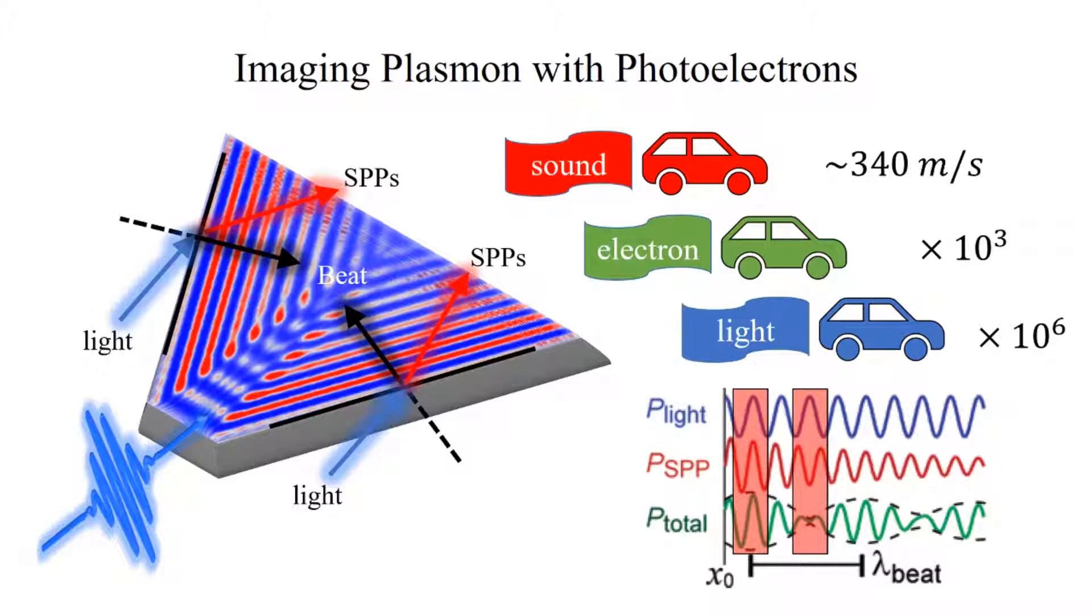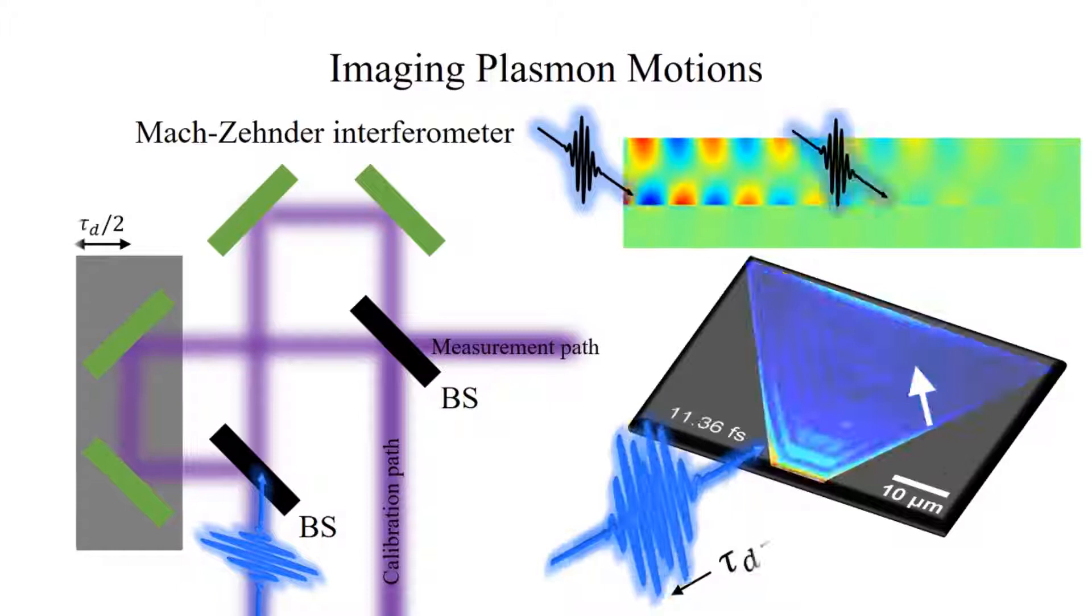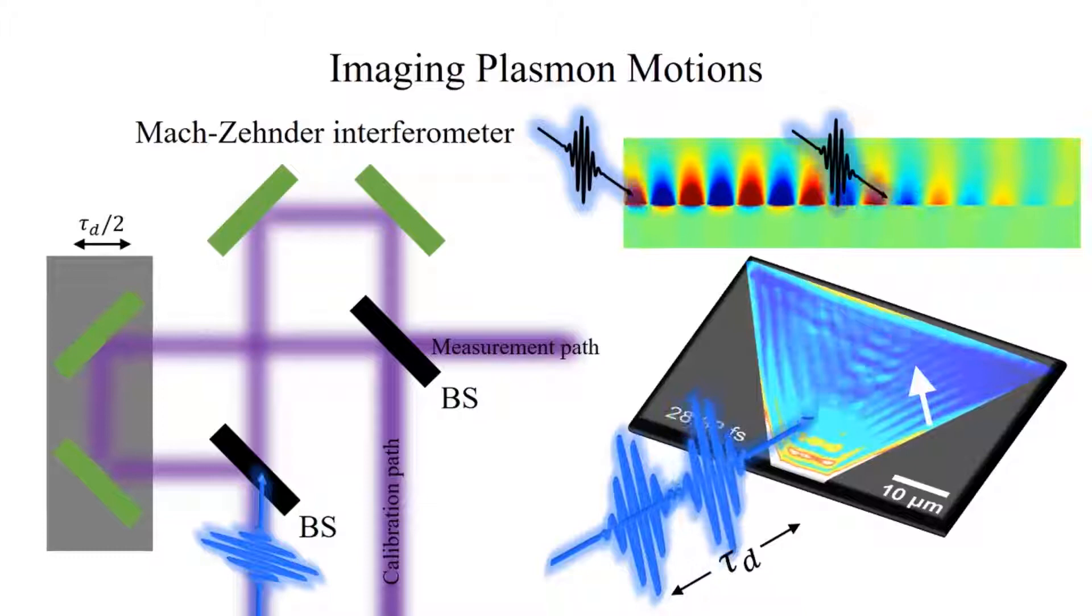To record the actual surface plasmon polariton motion, we use excitation with identical pulse pairs, which are produced by a Mach-Zehnder interferometer. The interferometer can control and scan the delay between the two pulses with precision of a few tens of attoseconds. With two pulses, we can use the first pulse to excite a surface plasmon polariton, and the second delayed pulse to create the interference pattern.